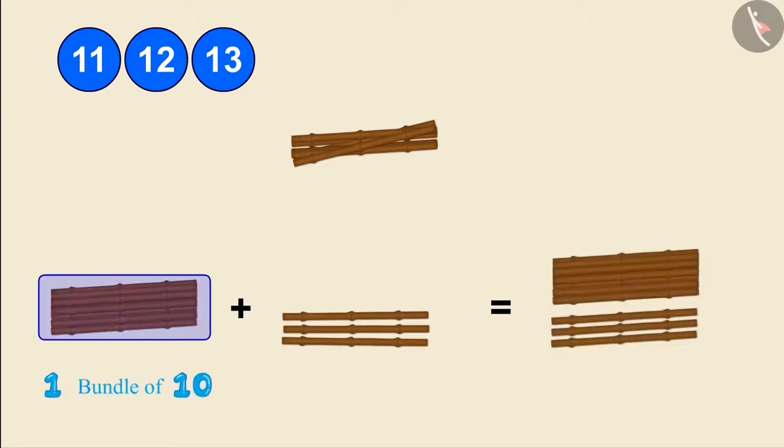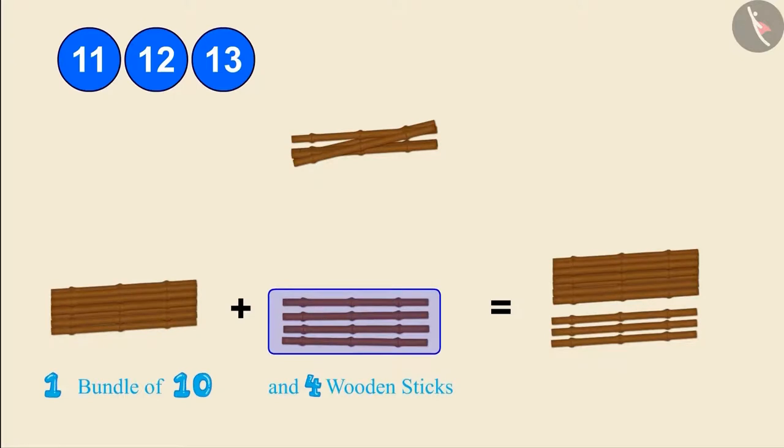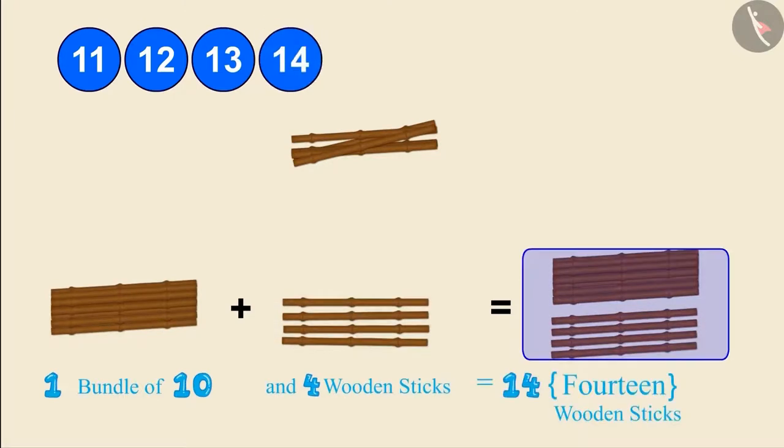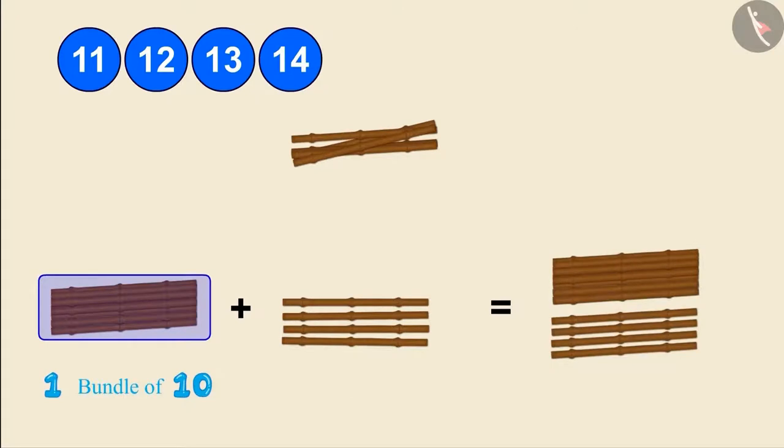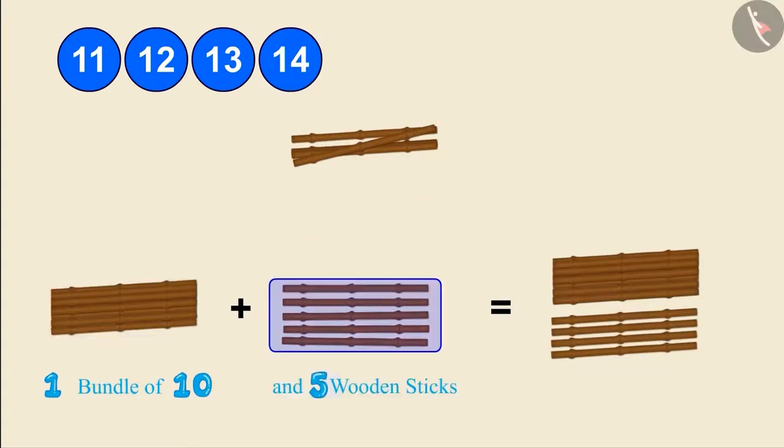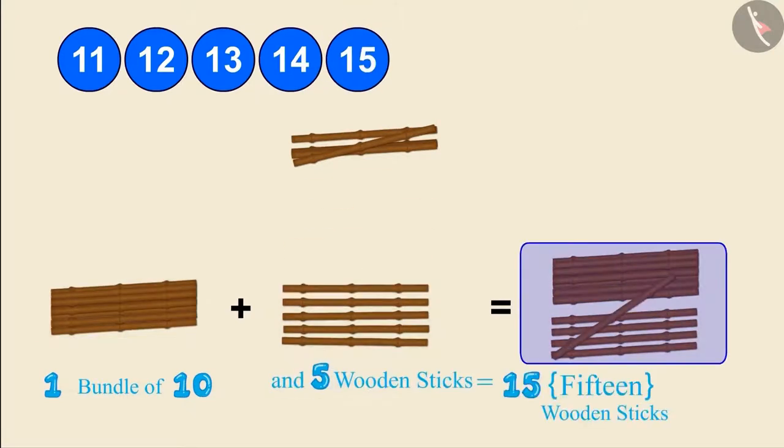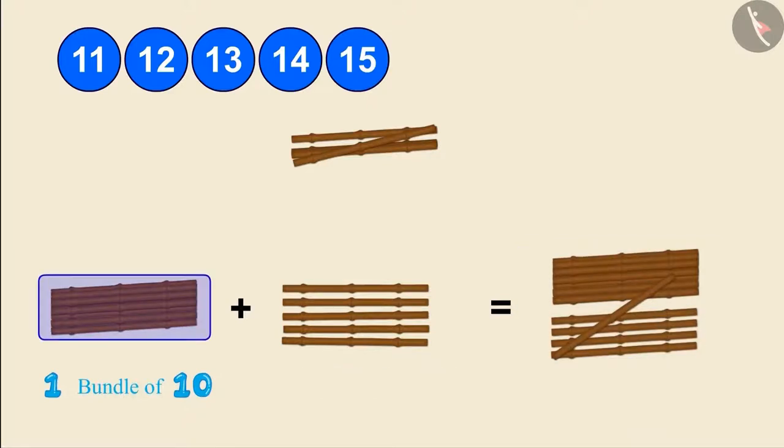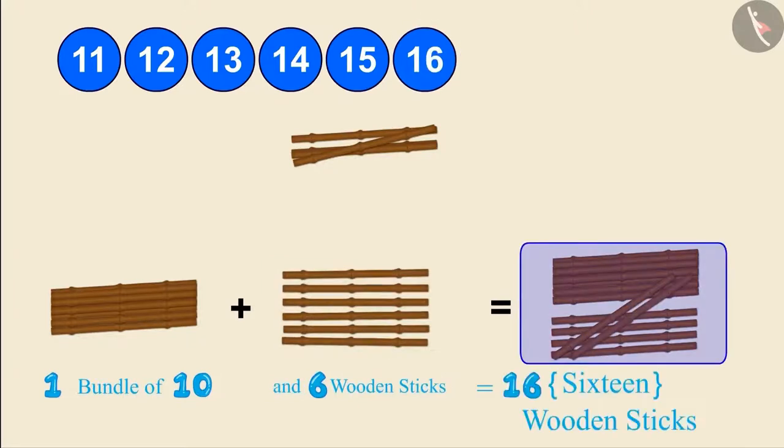One bundle of 10 and four wooden sticks make 14 wooden sticks. One bundle of 10 and five wooden sticks make 15 wooden sticks. One bundle of 10 and six wooden sticks make 16 wooden sticks.